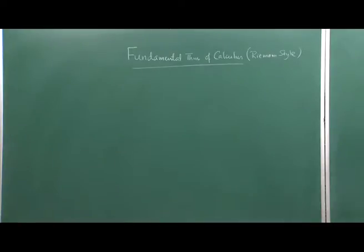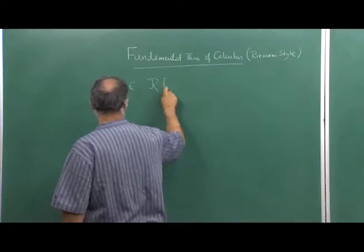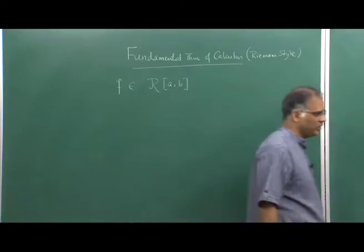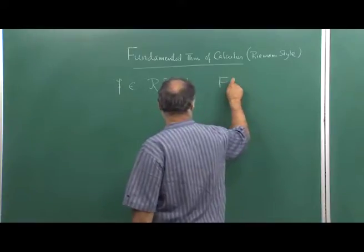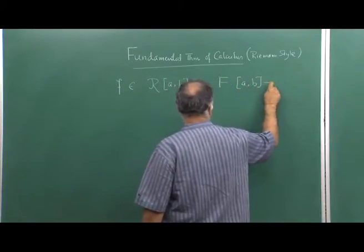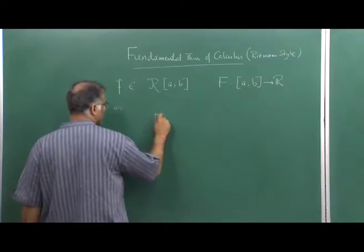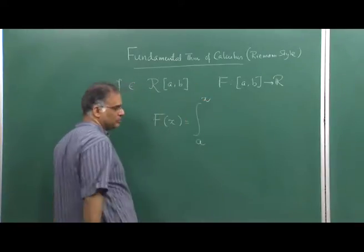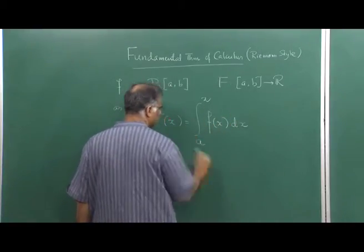You have a function f which is in R[a,b] — a bounded function integrable on R[a,b]. R[a,b] means this is the set of all bounded functions which are Riemann integrable on [a,b]. You have this function f in R[a,b] and you define a function capital F from [a,b] to ℝ as F(x) = ∫_a^x f(x) dx.